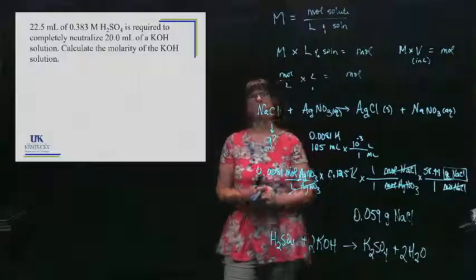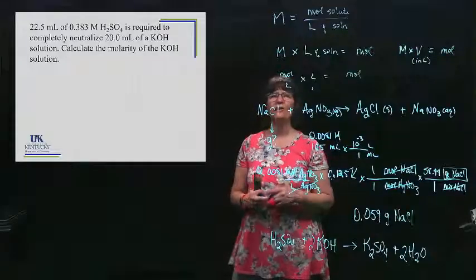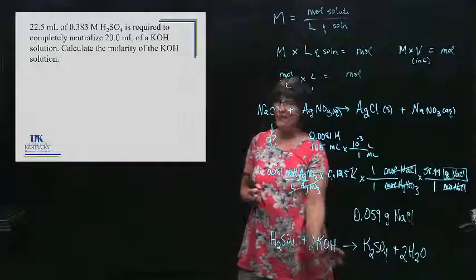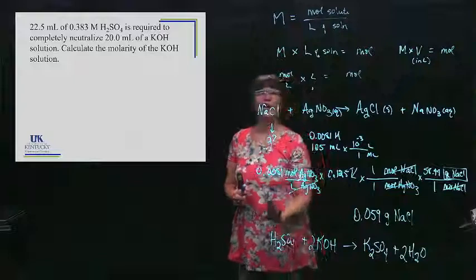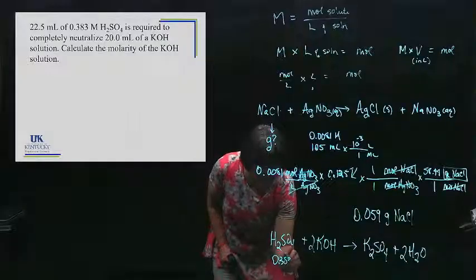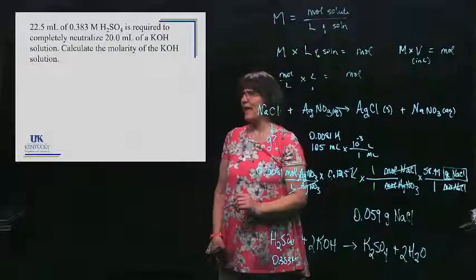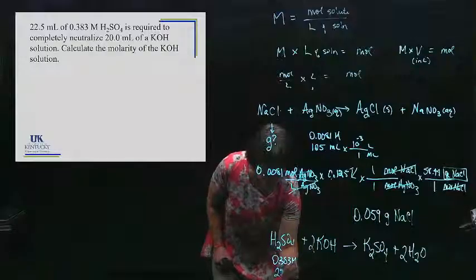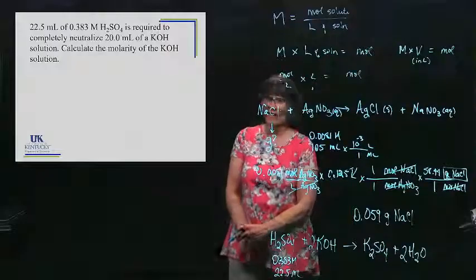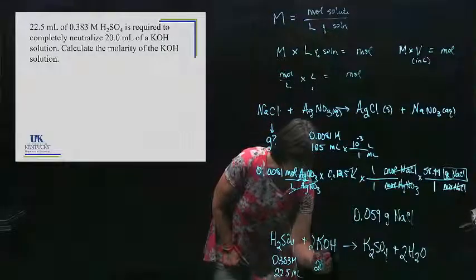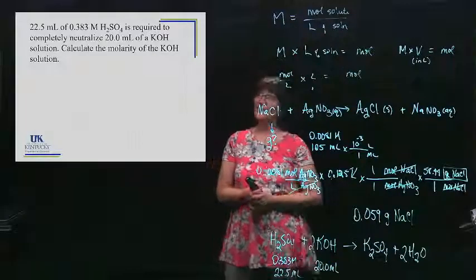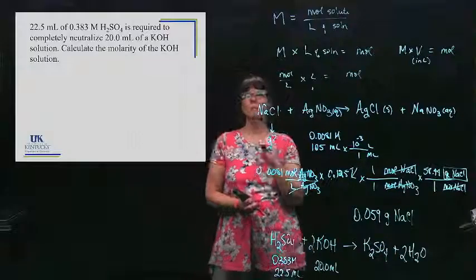Now I'm looking for my known. My known is what's going to get me into moles. So they gave me information about the H2SO4, and they gave me information about the KOH. I'm going to write underneath them what they gave me. For the H2SO4, they gave me that it was 0.383 molar, and it had a volume of 22.5 milliliters. For the other guy, they gave me 20 milliliters. This is not a limiting reactant problem because they didn't give you measured amounts that would get you into moles for both of those.